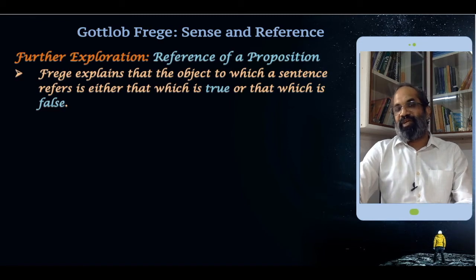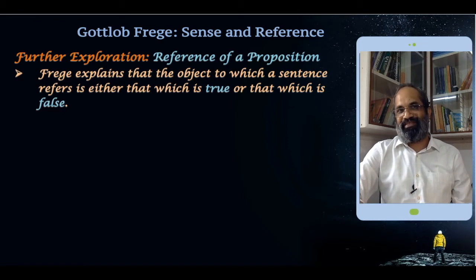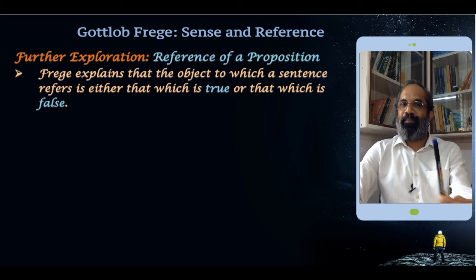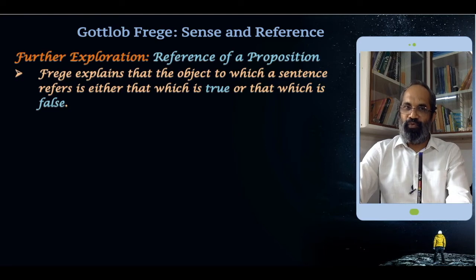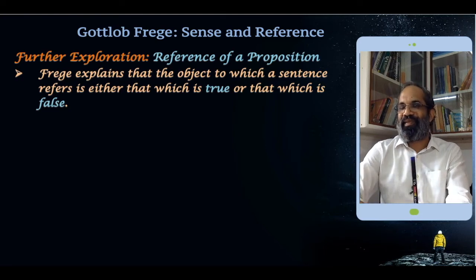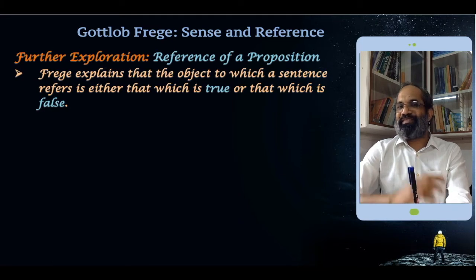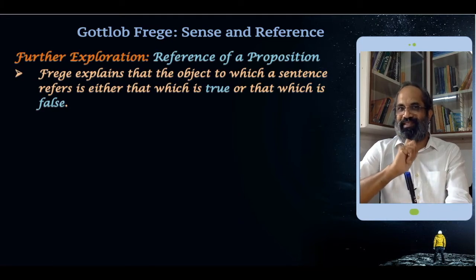But what about the reference of a proposition? That is what we are going to look into first. What is the reference of a proposition? Consider: 'The pen is blue' — it is blue ink, the pen is blue colored. So what is the reference of this sentence?